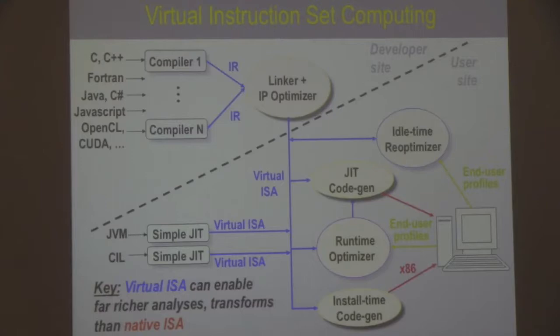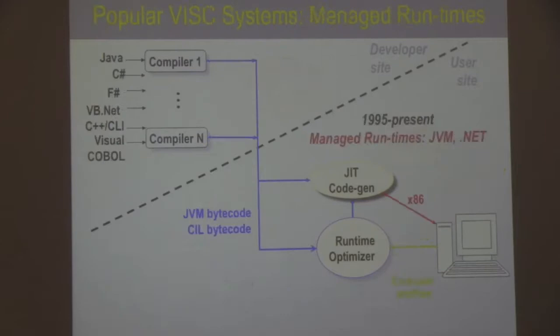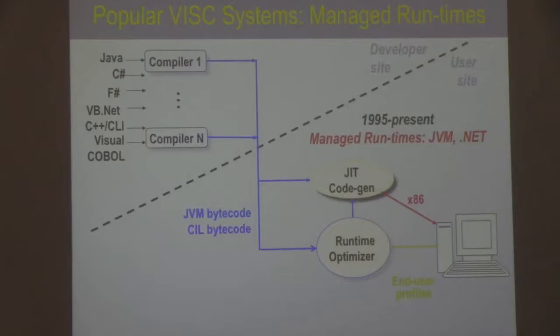There's a whole range of IBM mid-range computers starting with the System 38, the AS/400, the iSeries, today the Power Systems — all use this model, but with a proprietary and idiosyncratic virtual instruction set that doesn't really work for non-proprietary systems. Managed languages are probably the most well-known and widely used example — the virtual instruction set is the bytecode, either JVM bytecode or CIL bytecode for .NET, compiled by just-in-time code generation with adaptive optimization at runtime.